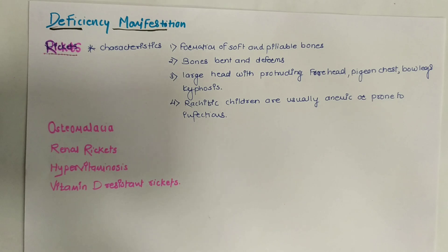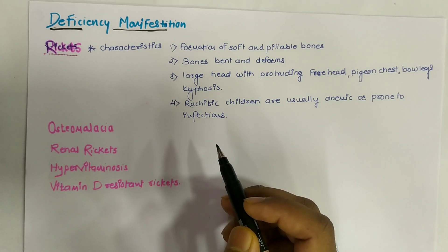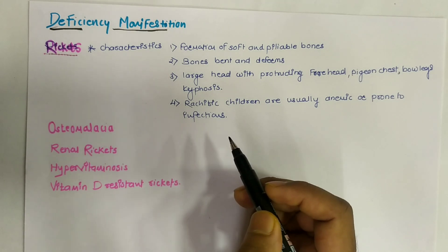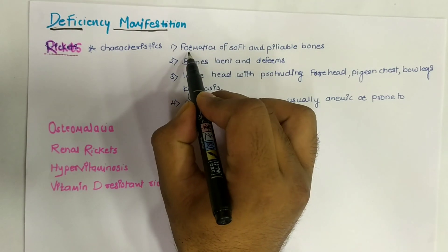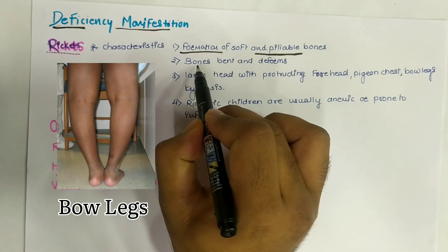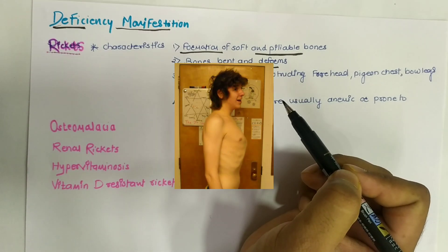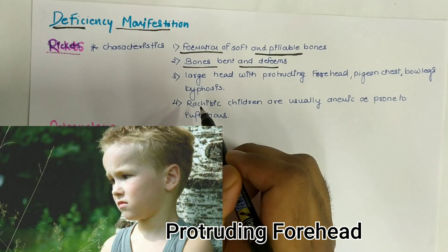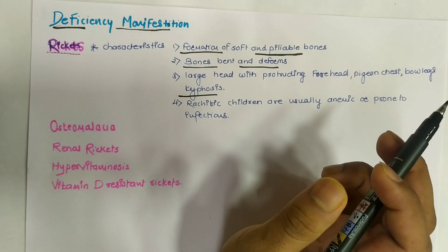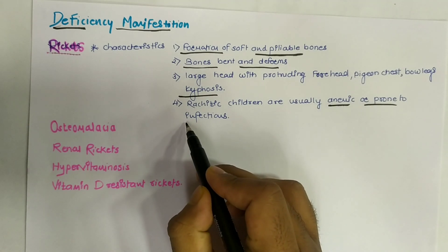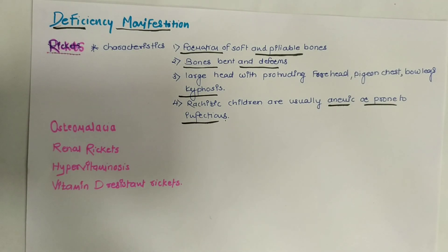Deficiency of vitamin D causes rickets in growing children and osteomalacia in adults. Rickets is characterized by formation of soft and pliable bones that bend and deform, a large head with a protruding forehead, pigeon chest, and bow legs. Affected children are usually anemic and prone to infections.